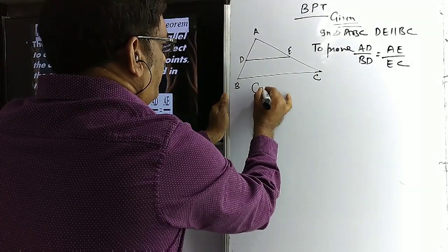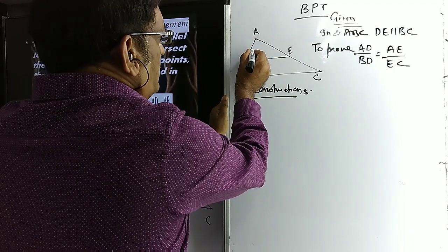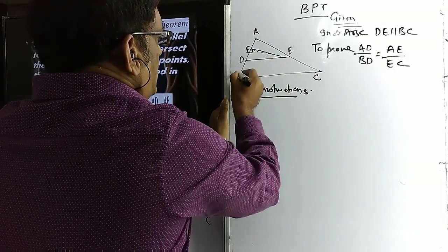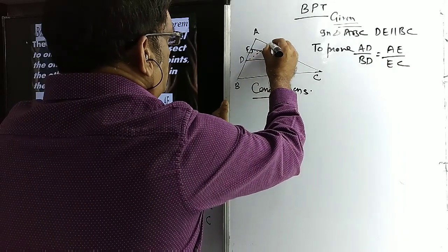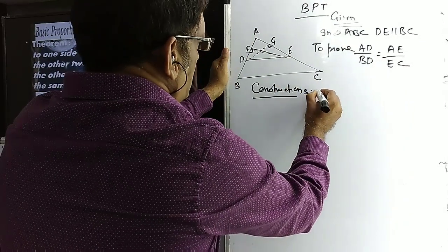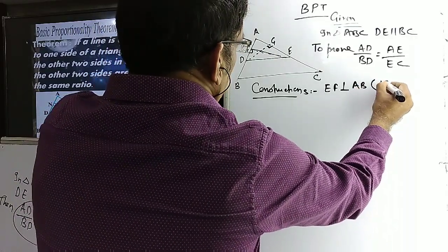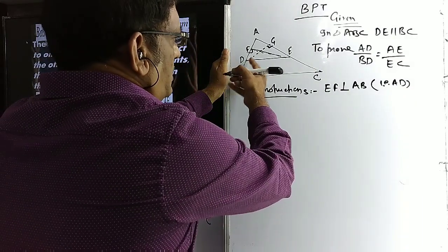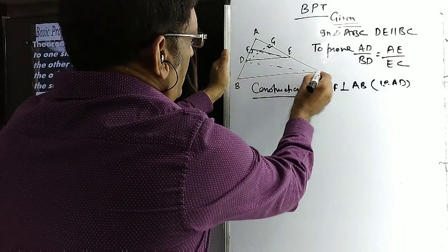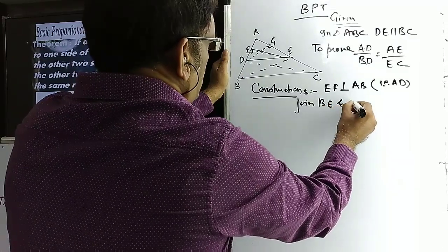For that we have to do a construction. We draw altitudes. Let us draw EF perpendicular to AB (i.e., AD), and DG perpendicular to AC (i.e., AE). We also join BE and CD.